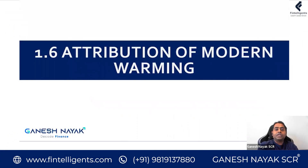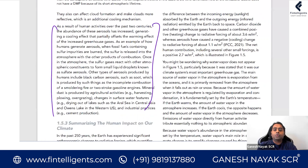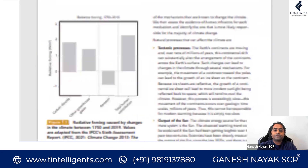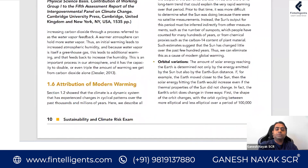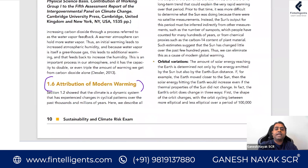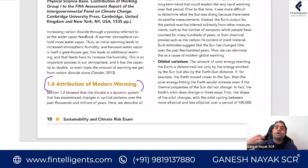Let us move towards the next section — attribution of modern warming. This is section 1.6 and they've given you the reasons for warming, which include both greenhouse and other natural planetary reasons. Let us go into those details.